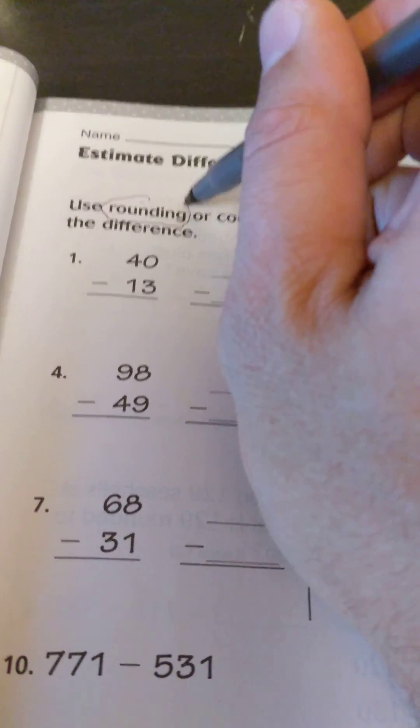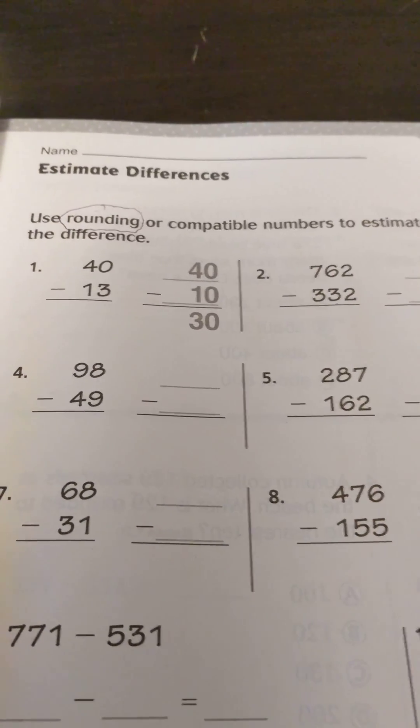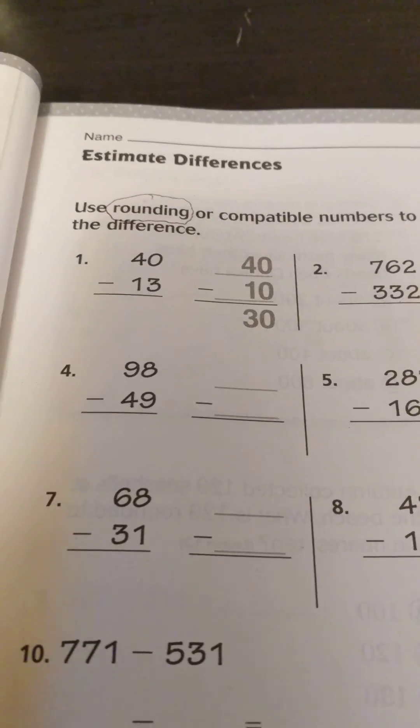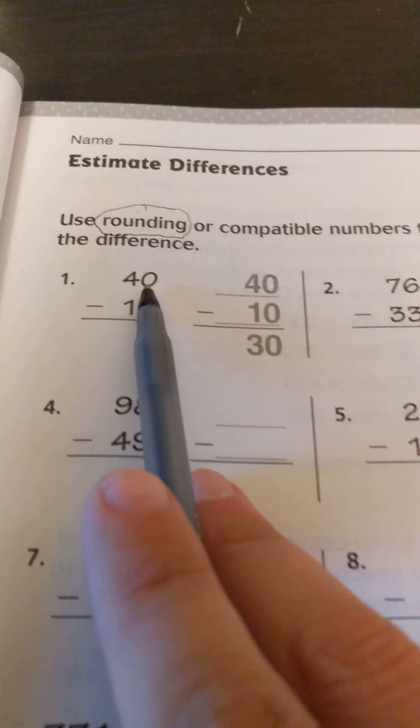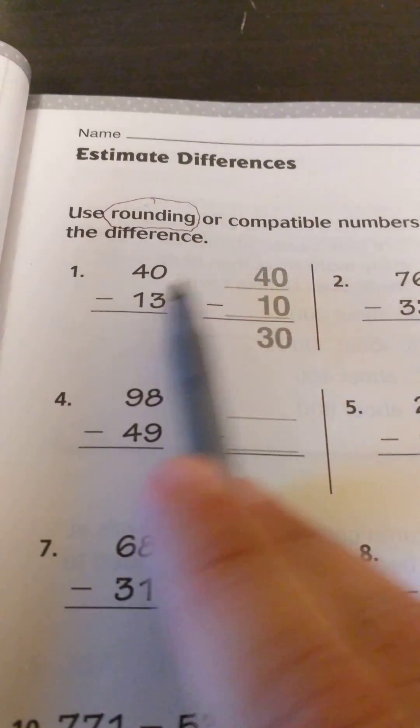If you're in another place, they may want you to work on compatible numbers, you may do that in class, so your answers might vary depending. As you see the examples done here, they rounded to the nearest ten, and that actually didn't need to be rounded because it's already zero.